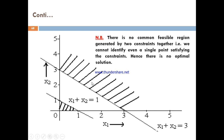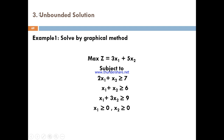There is no common region between these two constraints, therefore there is no optimal solution, as we can see from this graph. The third complexity issue in linear programming is the unbounded solution. For example: maximized Z equals 3x1 plus 5x2, subject to three constraints with a given non-negativity constraint.